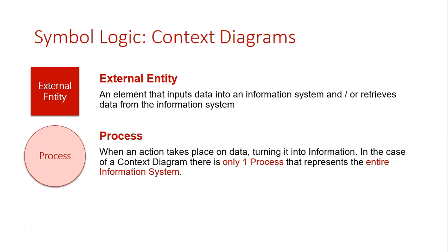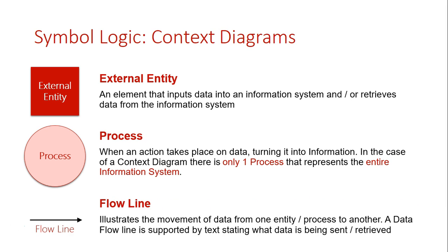We've got a process, which in the case of a context diagram, is a circle, and only one circle that represents the entirety of the information system. And then we've got flow lines, which illustrate the movement of data between external entities and the actual information system itself.